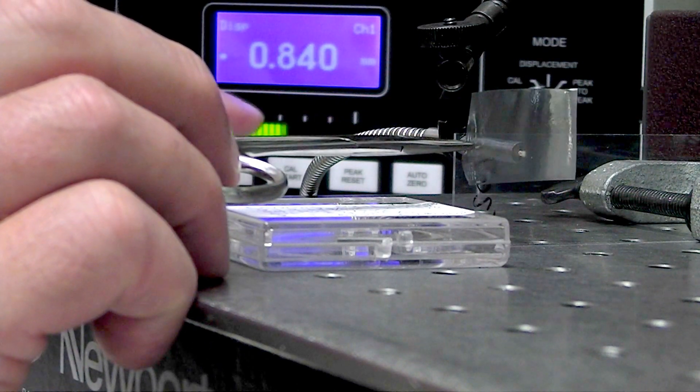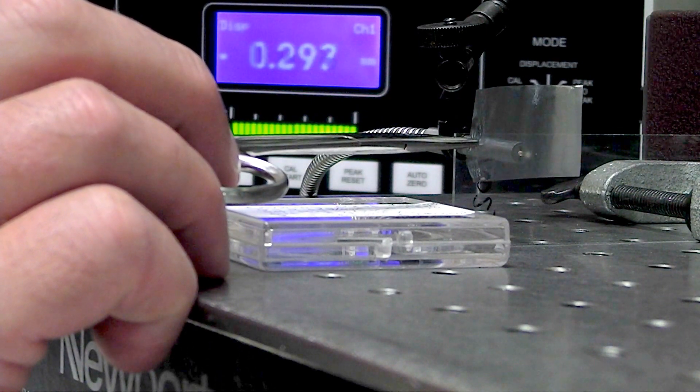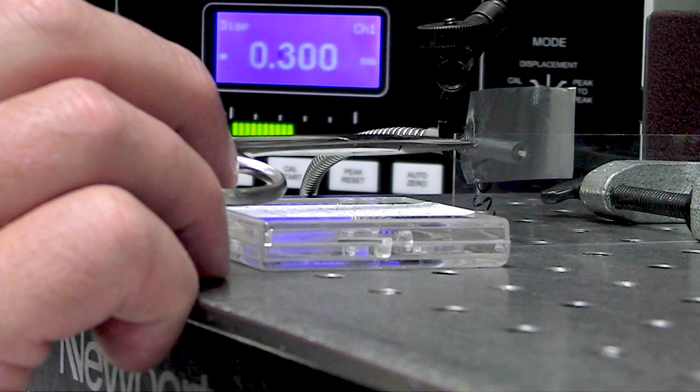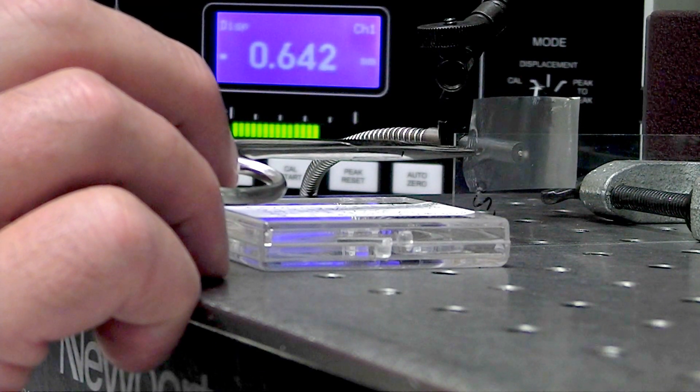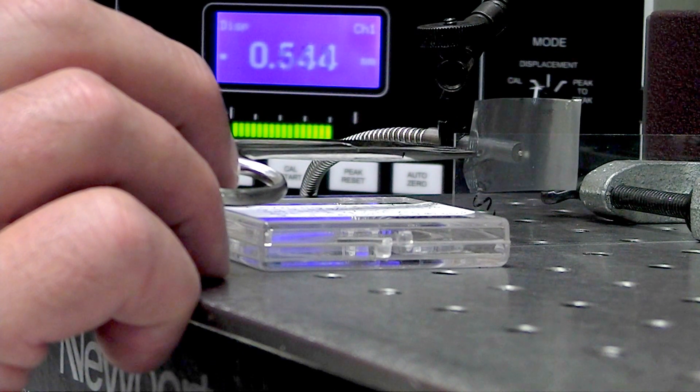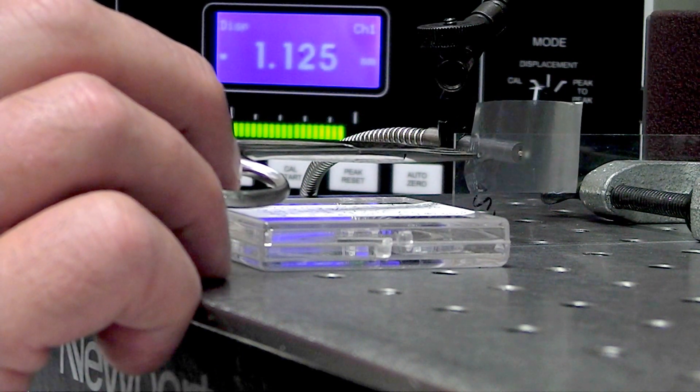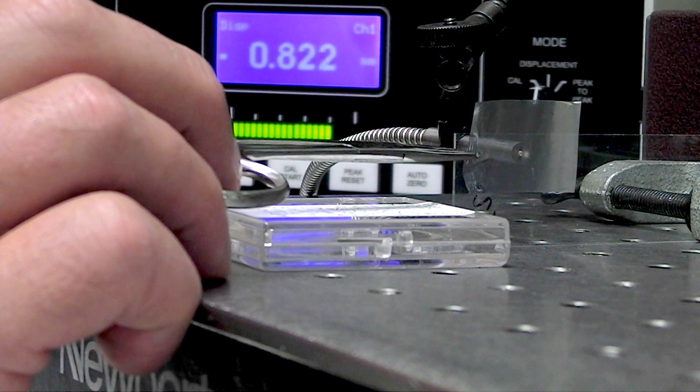We can see that we can detect the distance there. Now, it's not calibrated for this, so this display is not accurate, but it gives you an idea that with the Reflectance Compensated Probe, we can detect a second surface through a first glass surface.